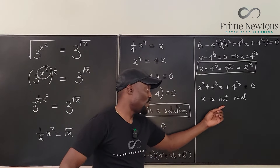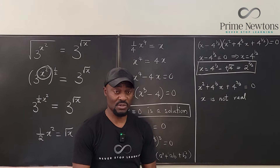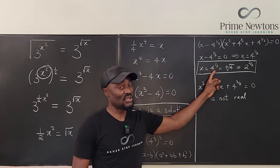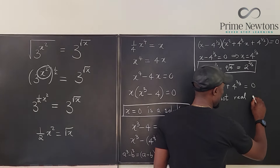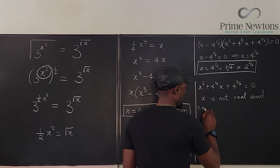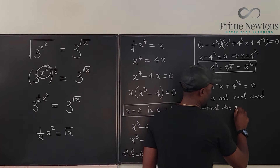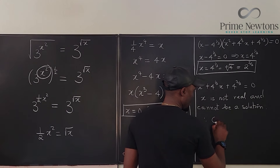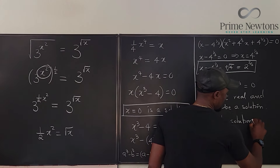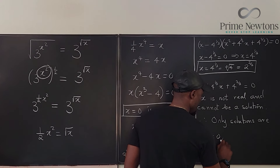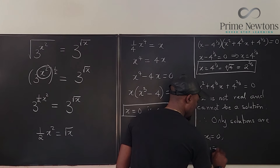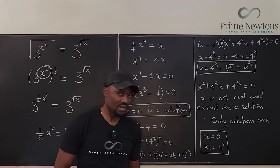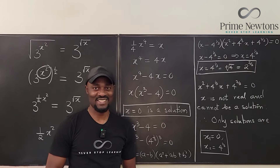There are only two valid solutions: x = 0 and x = the cube root of 4. Anything else is not going to work. Therefore the only solutions are x₁ = 0 and x₂ = 4^(1/3), or the cube root of 4. Never stop learning — those who stop learning stop living. Bye-bye.